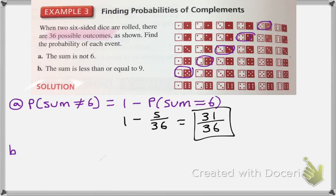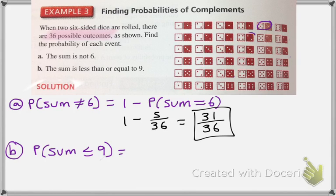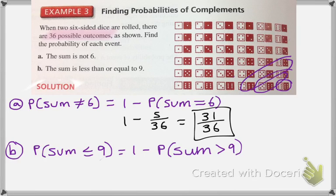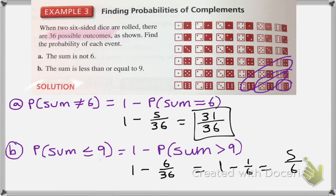For part B, we want the probability that the sum is less than or equal to 9. Again there are many such outcomes, so we use the complement — the probability that the sum is greater than 9. I see 6 outcomes where the sum is greater than 9. So we do 1 minus 6 over 36, which is 1 minus 1/6, giving us a 5 out of 6 probability. The complement is most useful when the number of favorable outcomes is large, so you can count a smaller number instead.